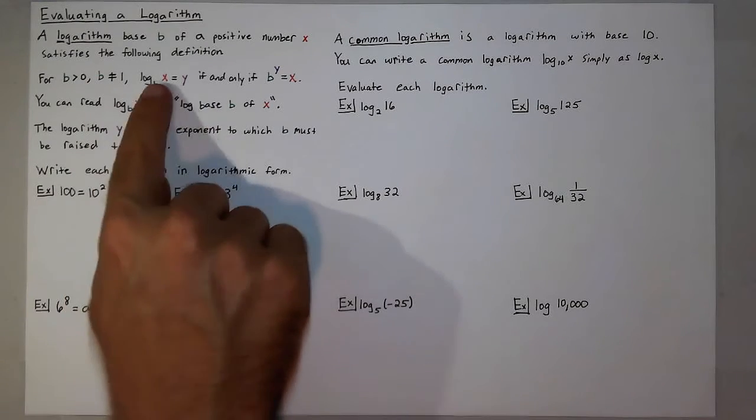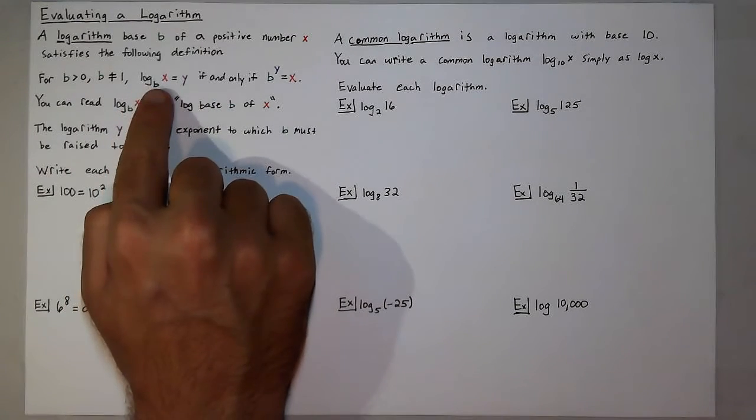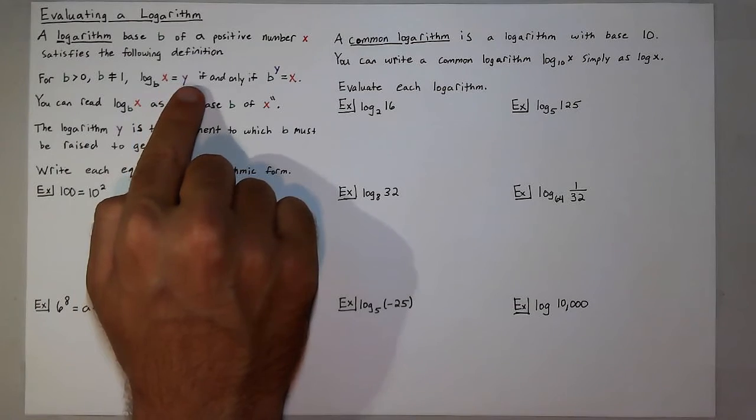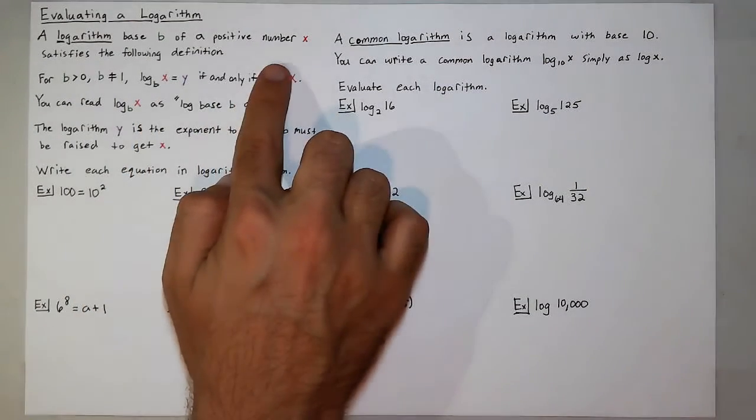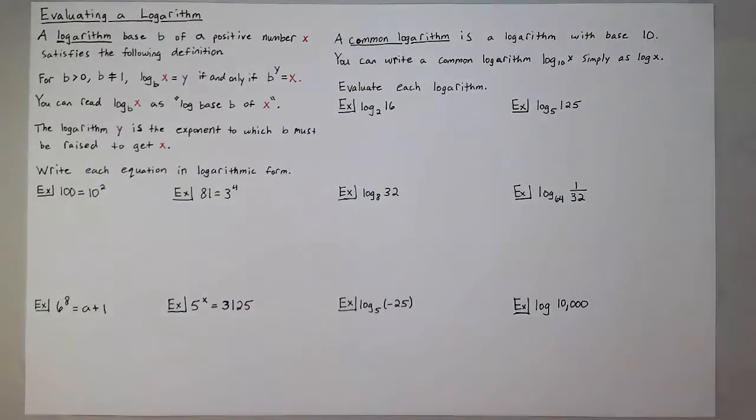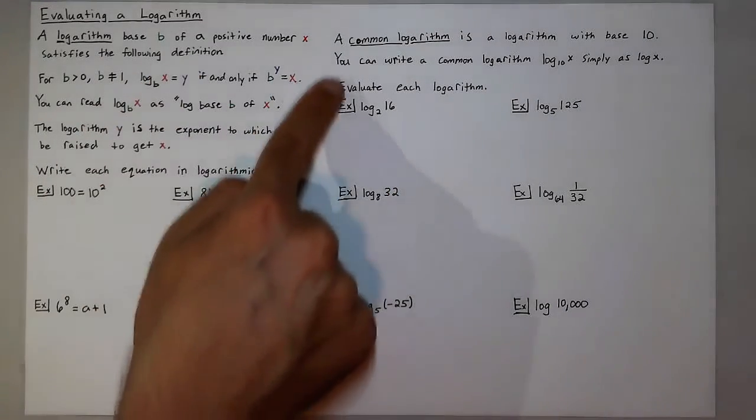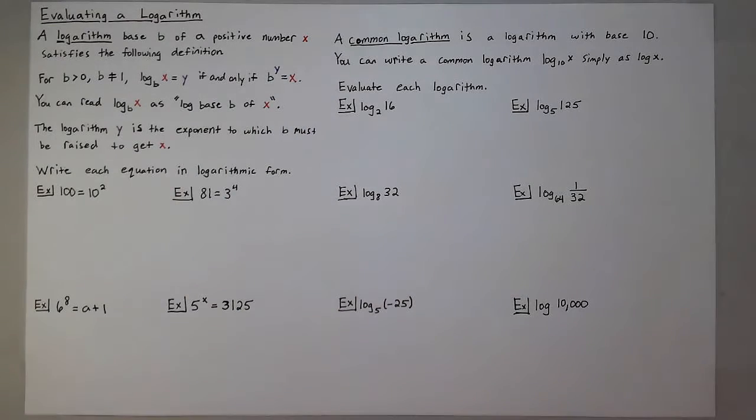To put that in perspective, you can say that log base b of x, which is equal to y, is the same as b to the y power equals x. I call this a logarithmic form, and this an exponential form for the same thing.